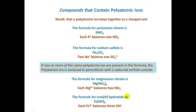The formula for iron(III) hydroxide: recall that the Roman numeral 3 corresponds to the charge on the ion, so we have iron 3+. The hydroxide ion is negative-one. When we put these together, we need three hydroxide ions for each iron(III) ion. So I enclose the hydroxide in parentheses and put the subscript 3 outside, indicating we have three hydroxide ions for each iron(III) ion.